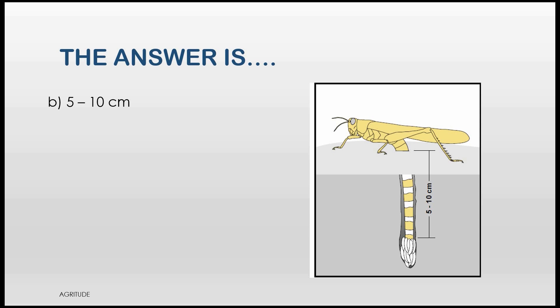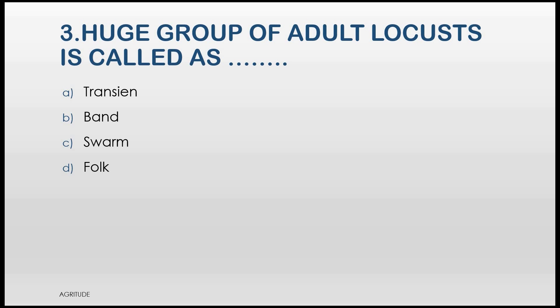Let's quickly move into third question. Here is the question on your full HD display. A huge group of adult locusts is called as A. Transient, B. Band, C. Swarm, D. Flock.